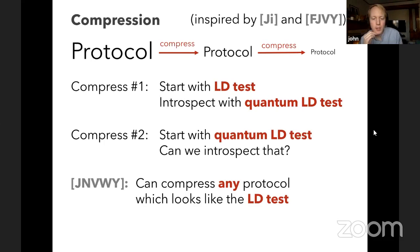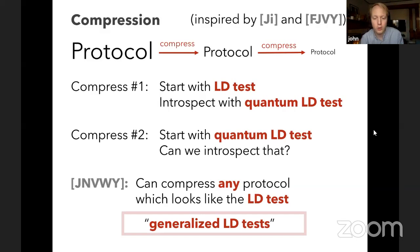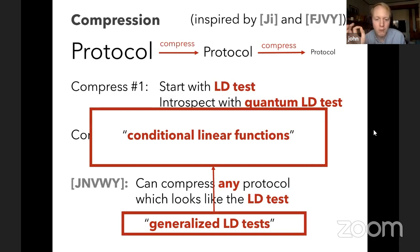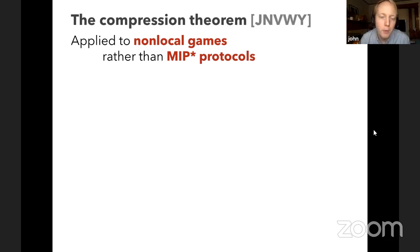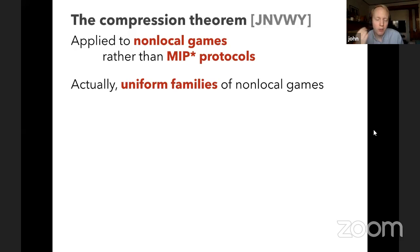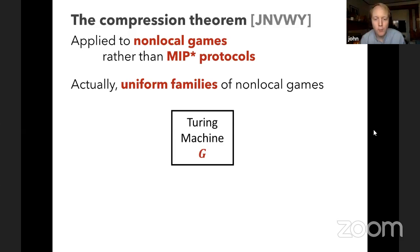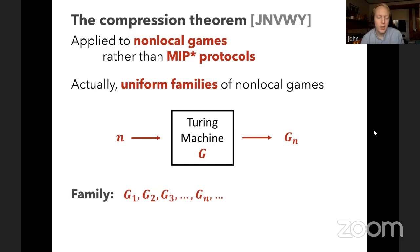One of our main results is that we can compress any protocol that looks like a low degree test — technically these are called conditional linear functions, as Zheng Feng will describe in the next talk. The compression theorem is applied not to MIP* protocols but to uniform families of non-local games: one specified by a Turing machine G that, given input n, outputs the description of a non-local game G_n. We show the existence of a Turing machine called Compress that takes as input a Turing machine encoding one of these uniform families of non-local games, and outputs another Turing machine encoding a different uniform family H.